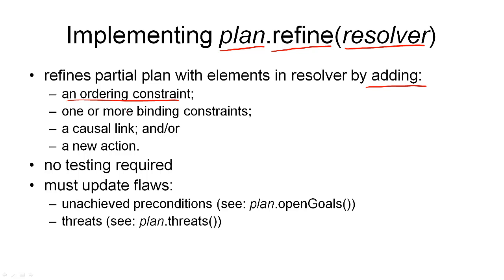This could be an ordering constraint. It could be one or more binding constraints on our variables. It could be a new causal link or it could be a new action or a combination of any of those, whatever our resolver specified.